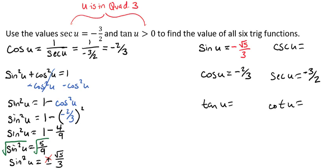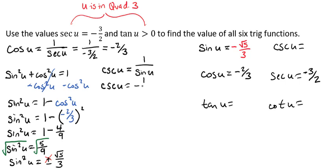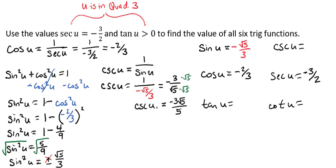Moving on to cosecant of u: cosecant is the reciprocal 1 over sine of u. So cosecant of u equals 1 over negative radical 5 over 3, which gives us negative 3 over radical 5. Since we can't have a radical in the denominator, rationalizing gives us negative 3 radical 5 over 5. So our cosecant of u is negative 3 radical 5 over 5.